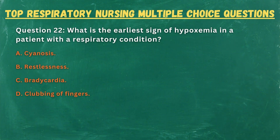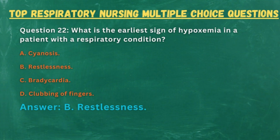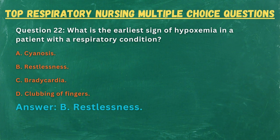Question 22. What is the earliest sign of hypoxemia in a patient with a respiratory condition? A. Cyanosis. B. Restlessness. C. Bradycardia. D. Clubbing of fingers. Answer: B. Restlessness.